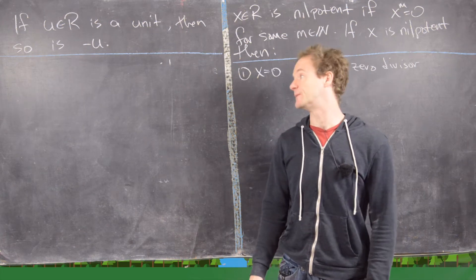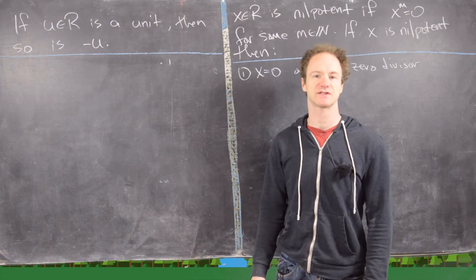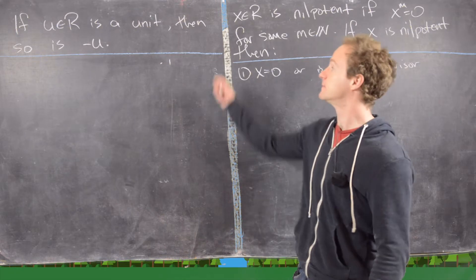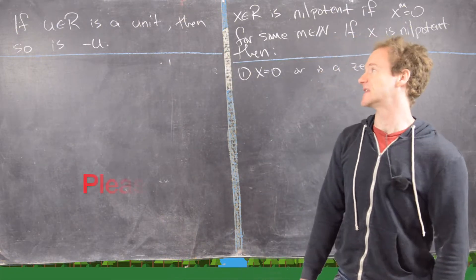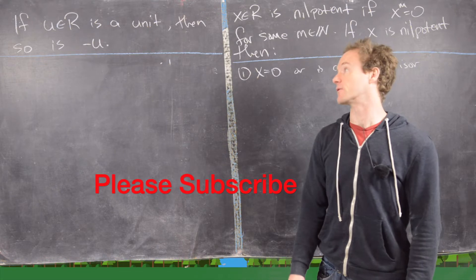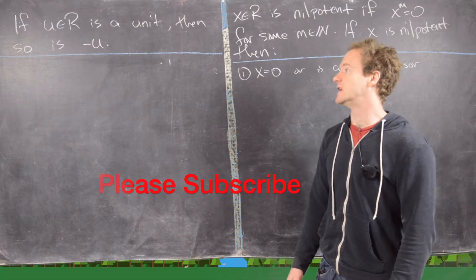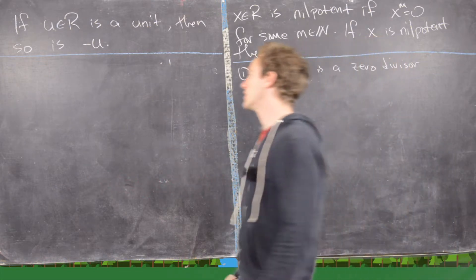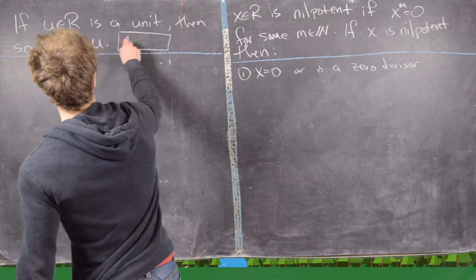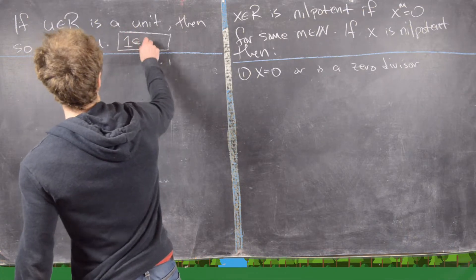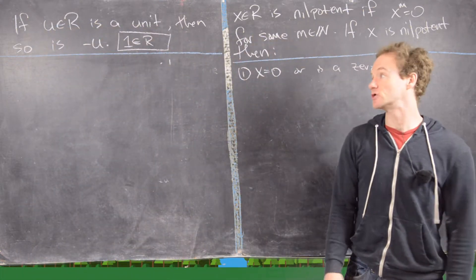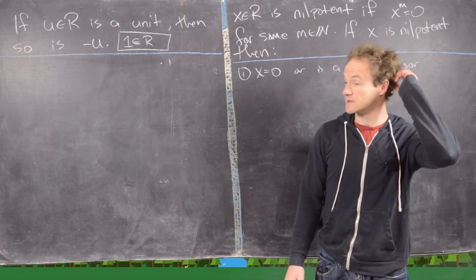In this video, we're going to look at a bunch of basic exercises involving rings. So let's hop right into it. The first one we want to show is that if u is a unit in a ring, then so is minus u. Note that implicitly this is implying that this is a ring with one, because otherwise the notion of a unit doesn't really make sense.